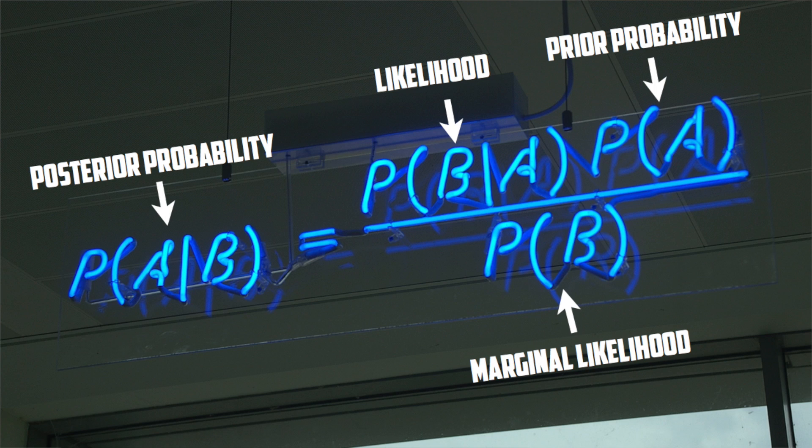There's another way to think about probability, and it's actually closer to the way we use the word in everyday speech. We can think of the probability of something as our degree of belief that it's true. We can make probability statements about anything, not just infinitely repeatable random samplings — such as the probability that an email in my inbox is spam, the probability that the Orioles will win the World Series, or the probability that the elevator in my building is broken. This way of discussing probabilities is called Bayesian statistics. Bayesian statistics also allows us to take a pre-existing belief about the state of the world, called a prior probability, and update it based on data we've collected. Our new belief, revised to reflect the data, is called the posterior probability.